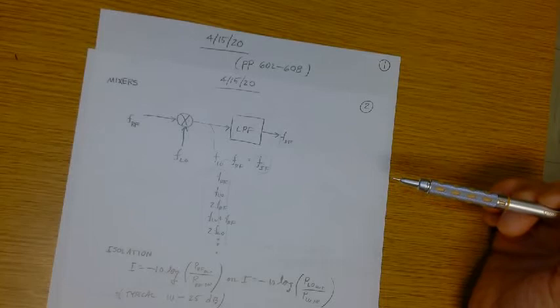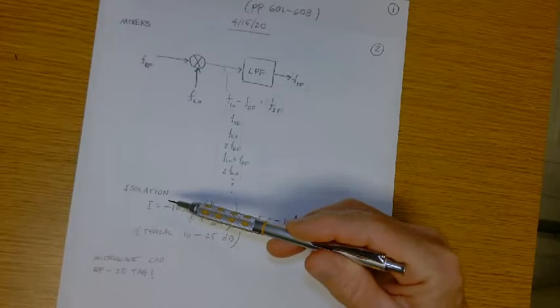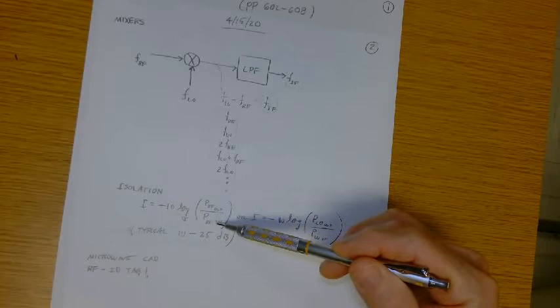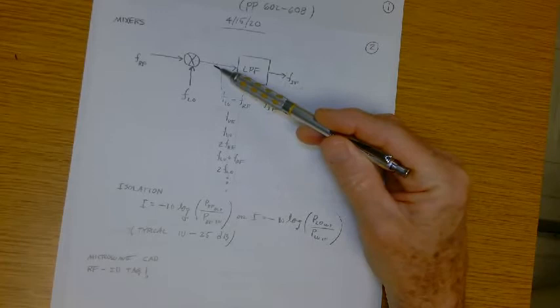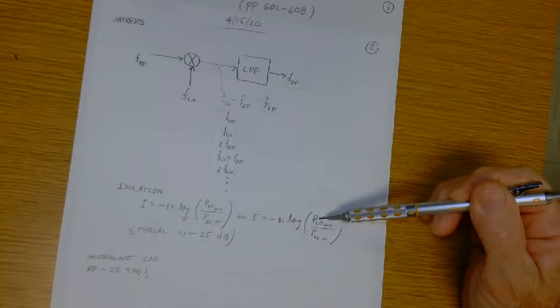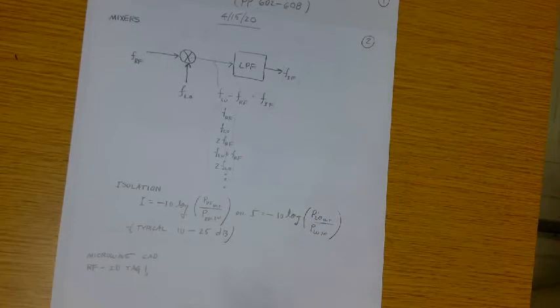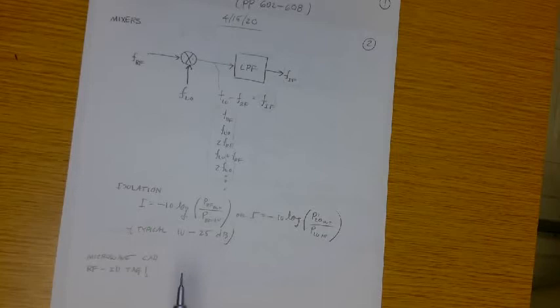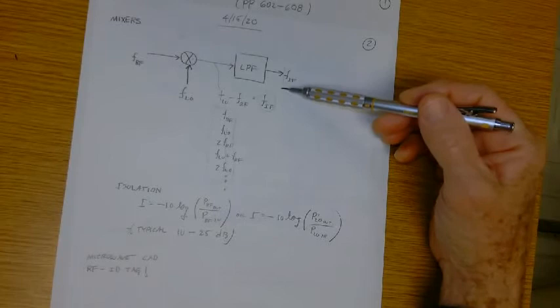Okay, so how do you characterize this thing? It's essentially characterized by computing the isolation, which is minus 10 log power of the RF out over RF in. So RF frequency out over RF frequency, and you want that to be small, and local oscillator out over local oscillator power in, and you want that to be small, so you can typically get an isolation of 10 to 25 dB. All right, so this is just a measure of how pure the output signal is at the IF frequency.